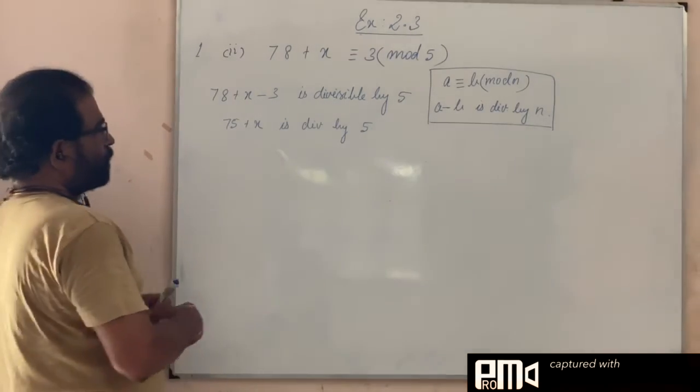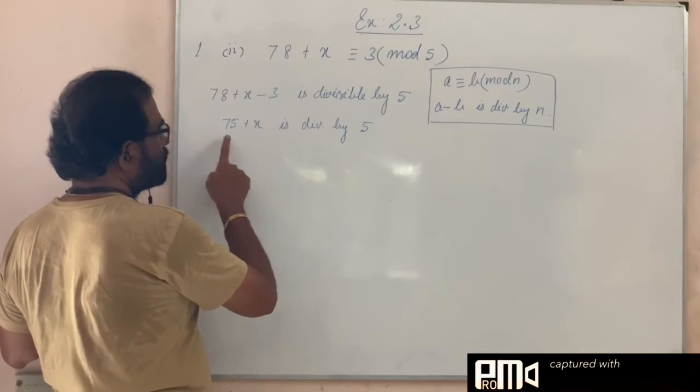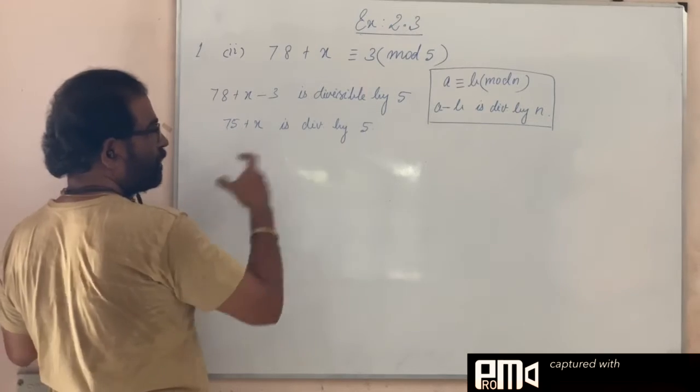Positive values: 75 + 1 is not divisible by 5, 75 + 2, 3, 4 also not. 75 + 5 equals 80, which is divisible by 5.